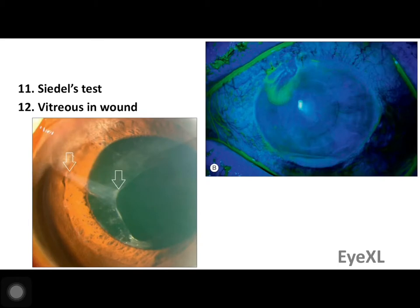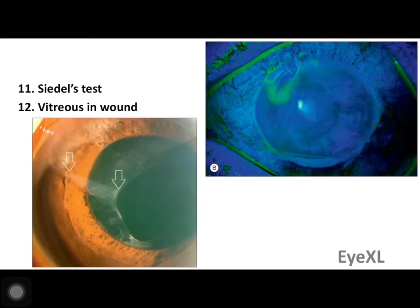The Seidel test can be performed: fluorescein dye is instilled into the conjunctival sac. If the dye is diluted around the incision site, it indicates fluid — aqueous humor — leaking from inside the eyeball, confirming a positive Seidel test, meaning there is a patent communication between the environment and the anterior chamber. In cases with posterior capsular rent, vitreous may prolapse into the clear corneal wound of phacoemulsification surgery, which should also be assessed.